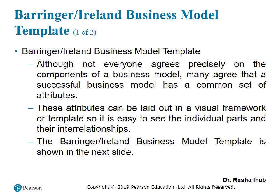Although not everyone agrees exactly on the components of the business model, people agree that successful business models have a common set of characteristics that must be written inside them. Baringer and Ireland, the authors of our book, put a visual framework or template containing individual parts to show the set of attributes or characteristics that must be written in any business model. The following slide is going to introduce the Baringer and Ireland business model template that we are going to study in our book.